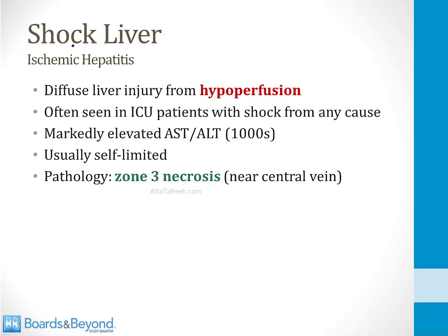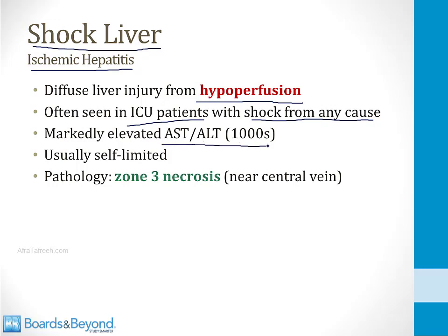Our last liver disorder for this module is shock liver, also called ischemic hepatitis. This is diffuse liver injury from hypoperfusion, often seen in critically ill patients in the ICU who have shock from any cause and hypoperfusion of all tissues including the liver. Shock liver results in marked elevation of the AST and ALT into the thousands — another cause of markedly elevated liver function tests. It's usually a self-limited condition, and the pathology again involves zone 3, with zone 3 necrosis seen near the central vein. And that concludes our module on liver diseases.